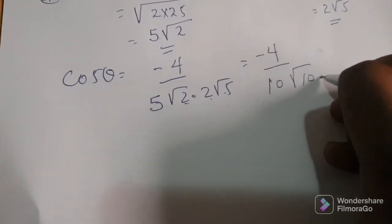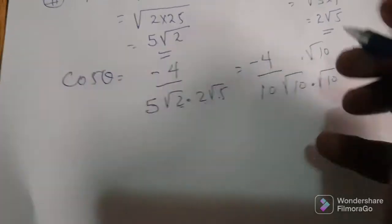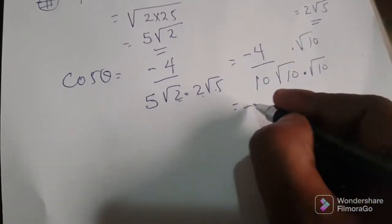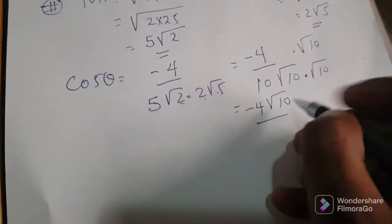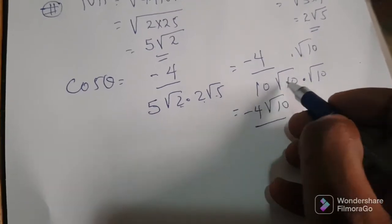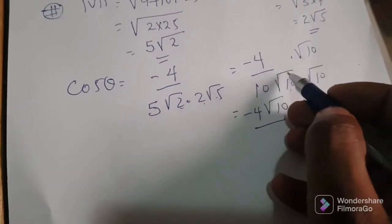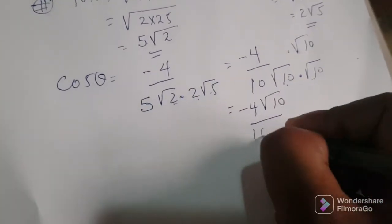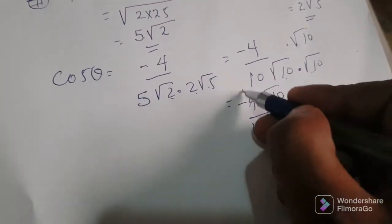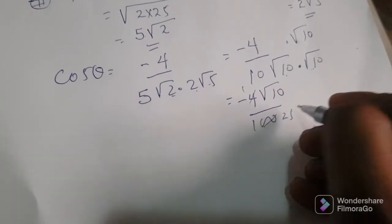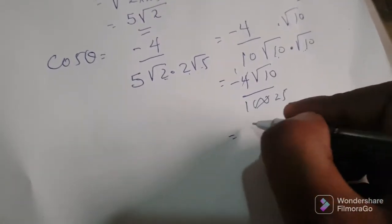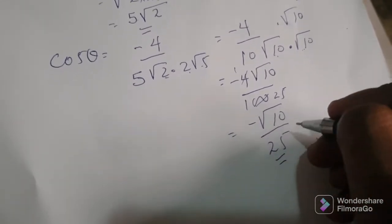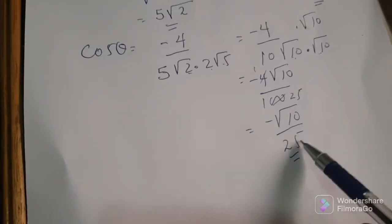To simplify, we rationalize by multiplying by radical 10 over radical 10. The numerator becomes negative 4 radical 10. The denominator: radical 10 times radical 10 is 10, and 10 times 10 is 100. Simplifying, the denominator reduces to 25. So cos theta equals negative radical 10 over 25. Since the value is negative, the angle is in the second or third quadrant.